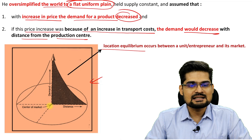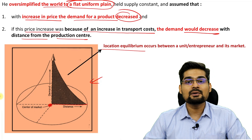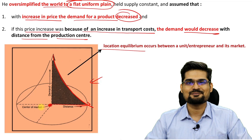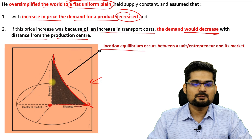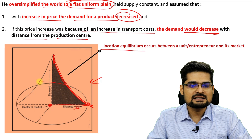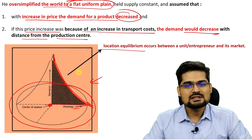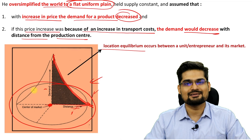If this is the center of the market where you are getting a product, as you go away from the market, demand decreases — the curve falls down with distance. This is a circular settlement with the center at the market. This diagram showcases the relationship between distance and demand, which determines the settlement pattern.